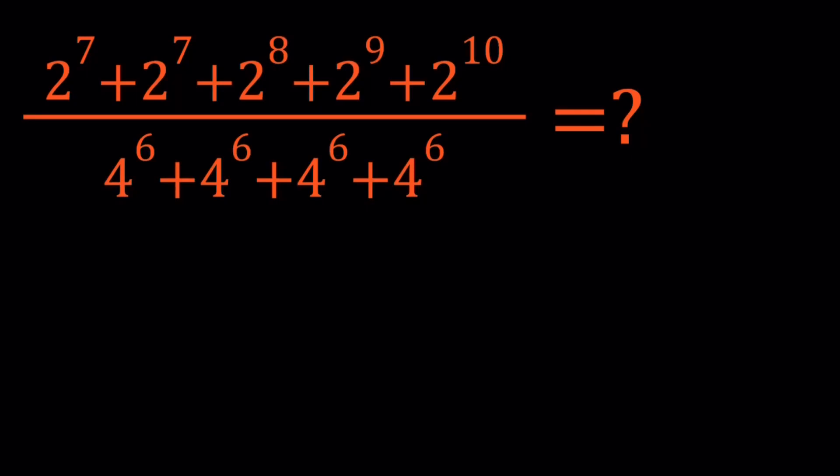Hello everyone. In this video we're going to be simplifying a rational exponential expression. We have 2 to the power 7 plus 2 to the power 7 plus 2 to the power 8 plus 2 to the power 9 plus 2 to the power 10, all divided by 4 to the 6 plus 4 to the 6 plus 4 to the 6 plus 4 to the 6, four times. We're going to simplify this expression as much as possible and talk about the properties being used.